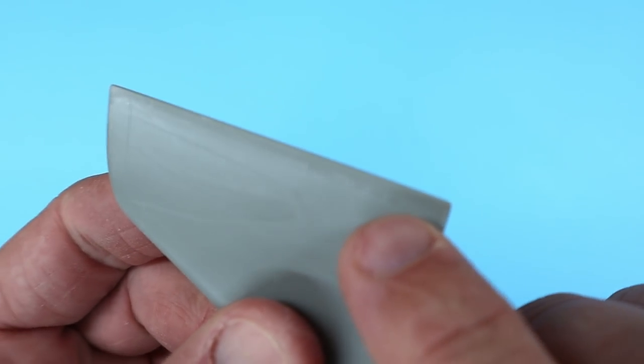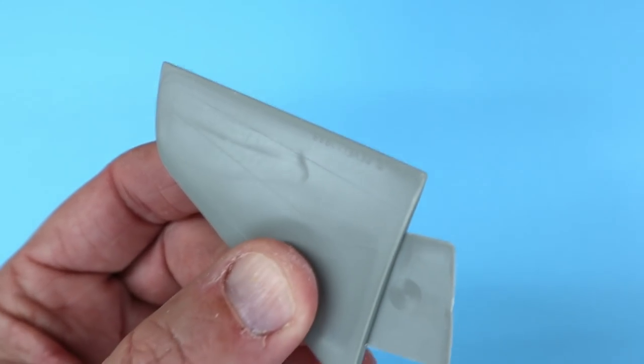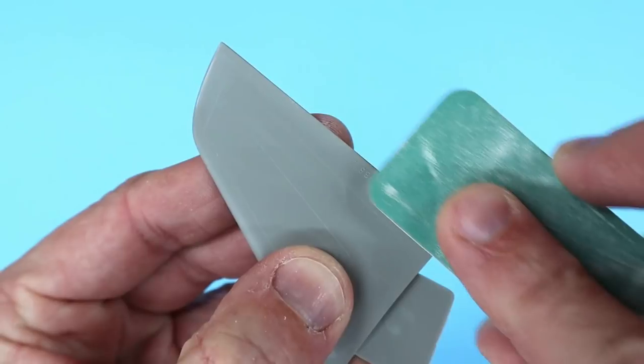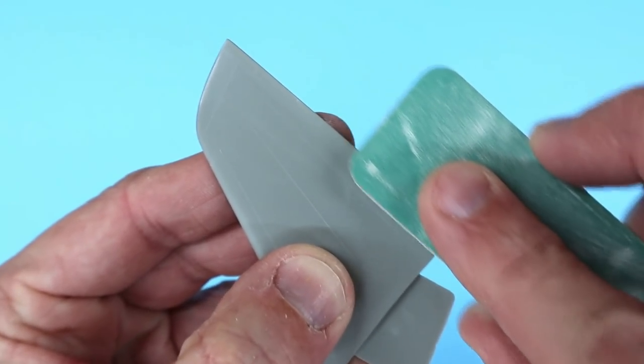Revell was pretty proud of their kits in the '80s, so proud that they marked their brand and date on the tail surfaces. That was easily sanded smooth using that 400 grit sanding pad.